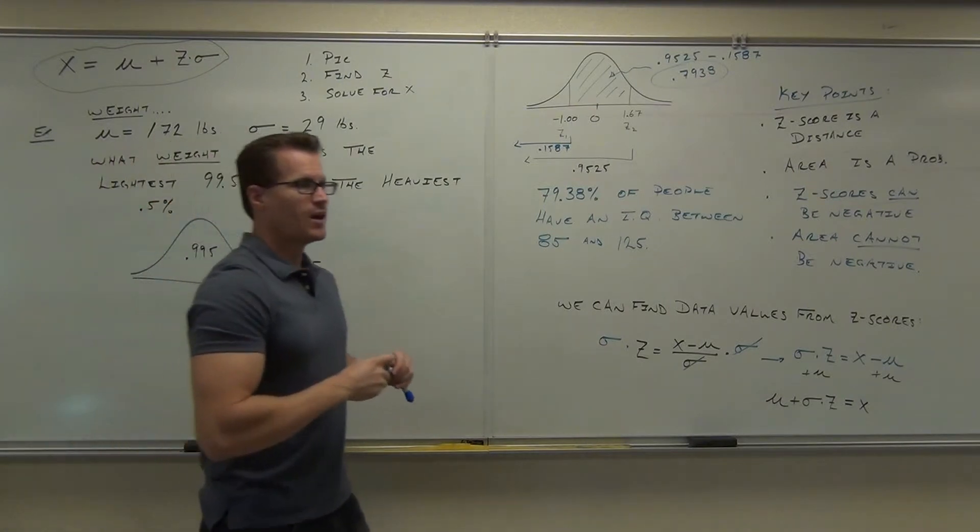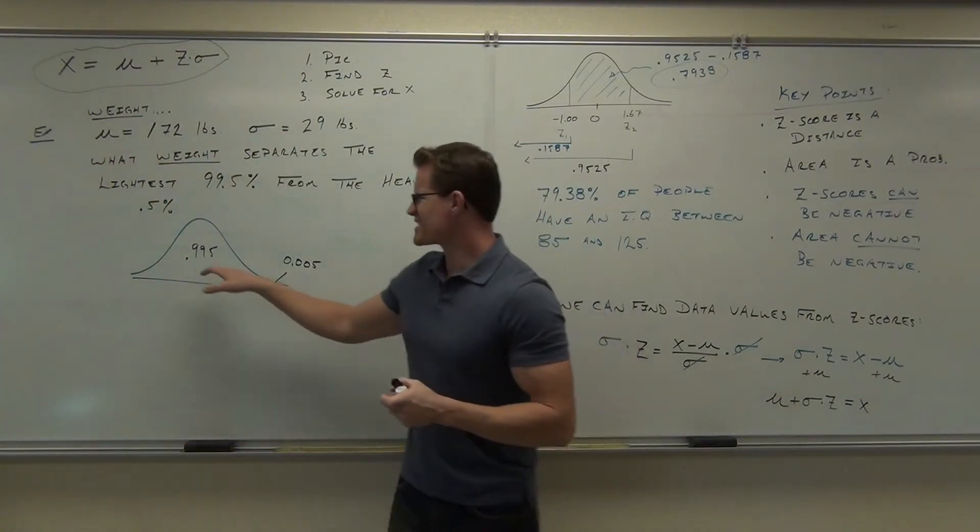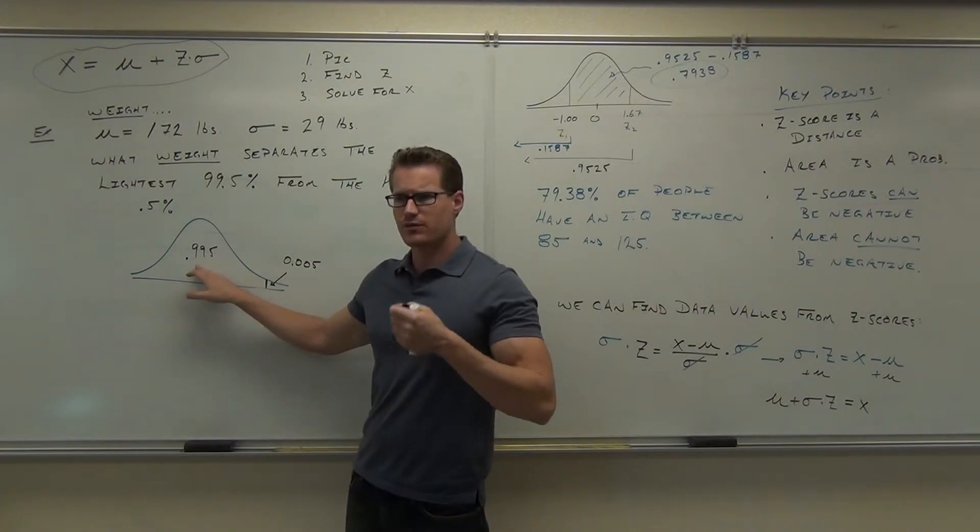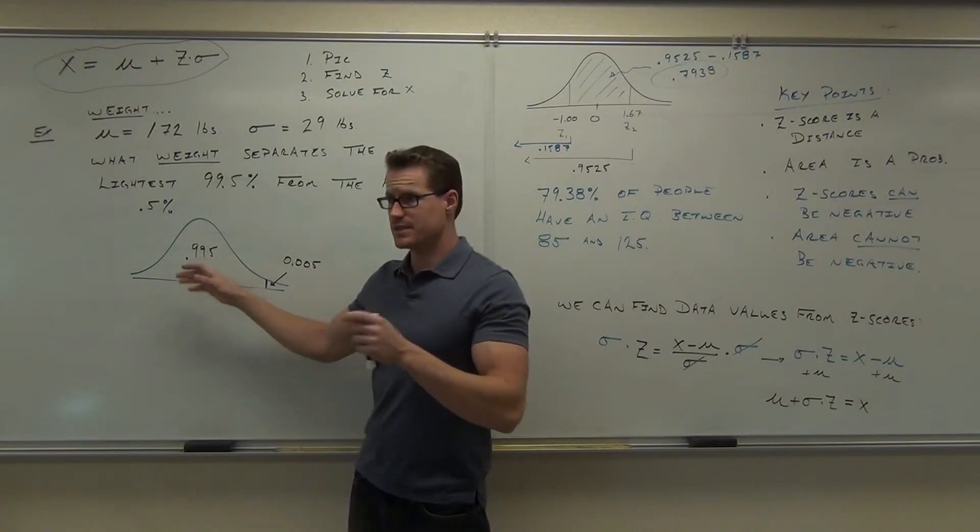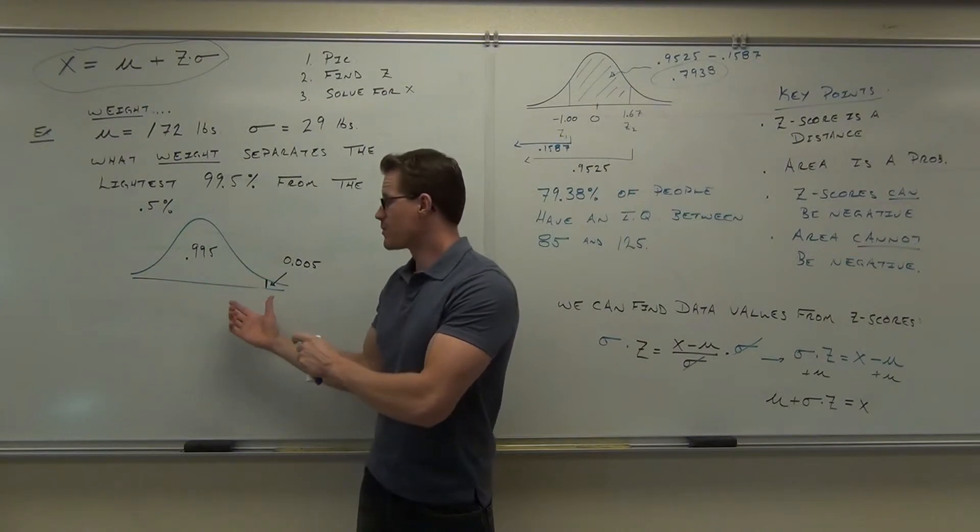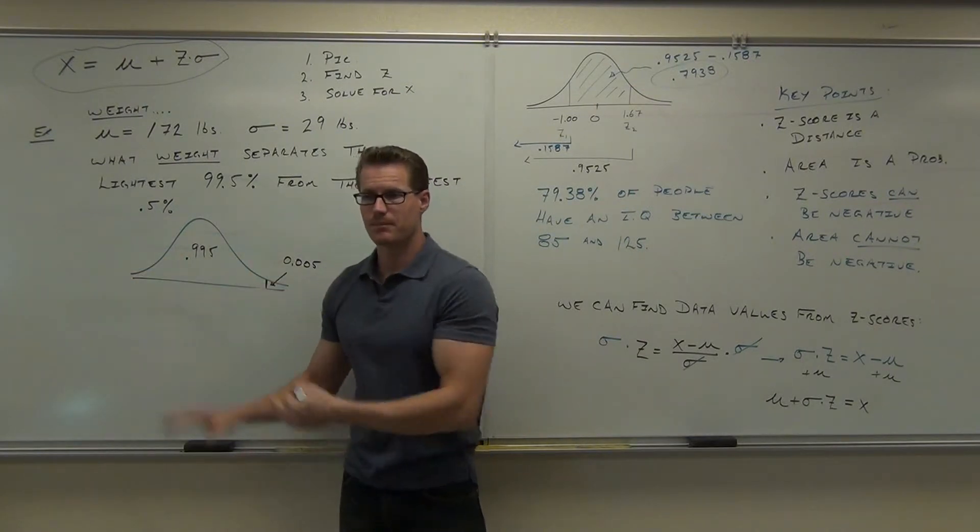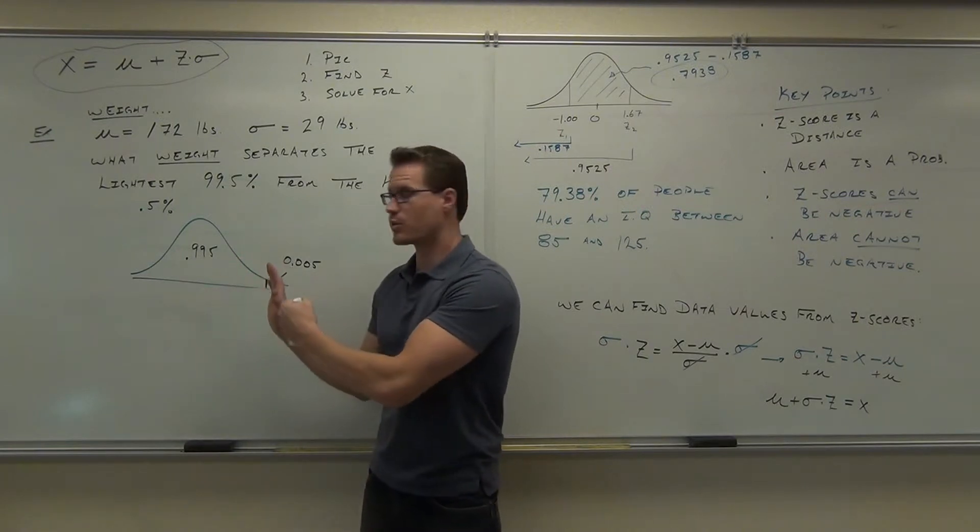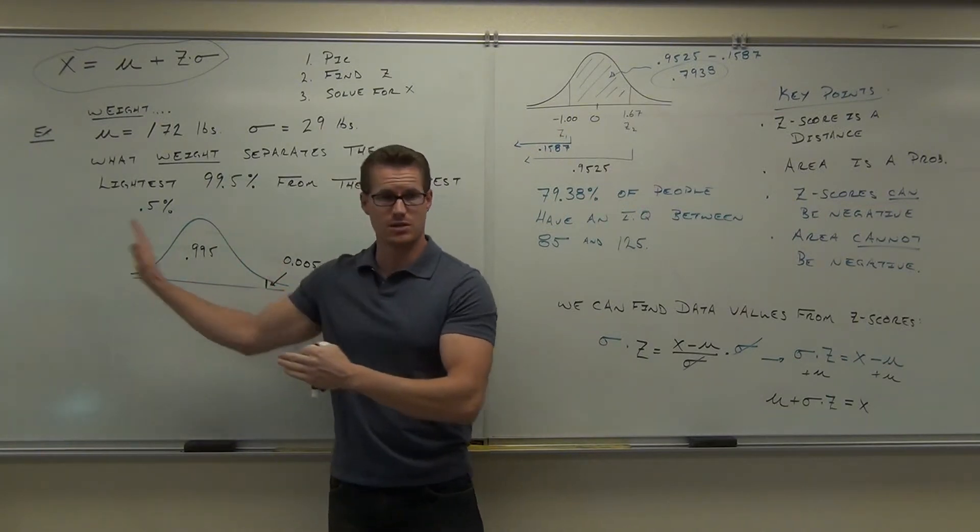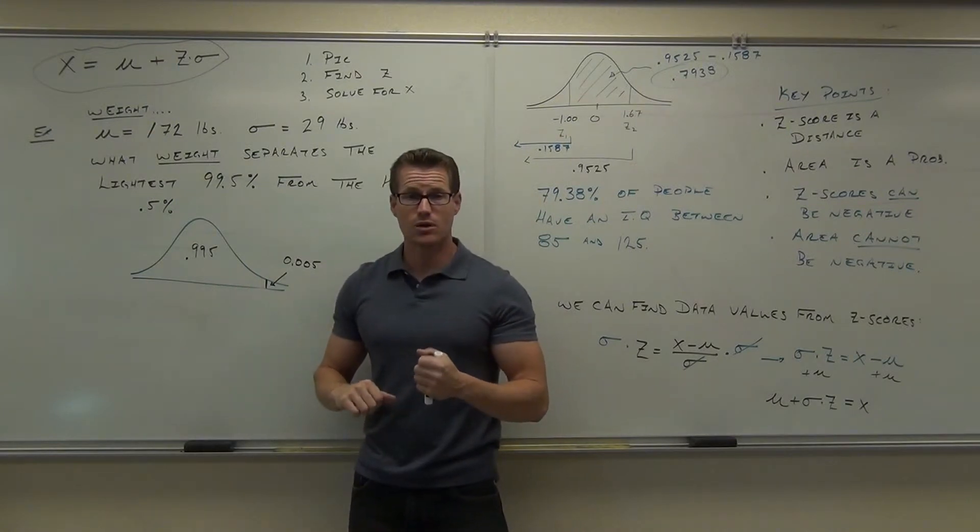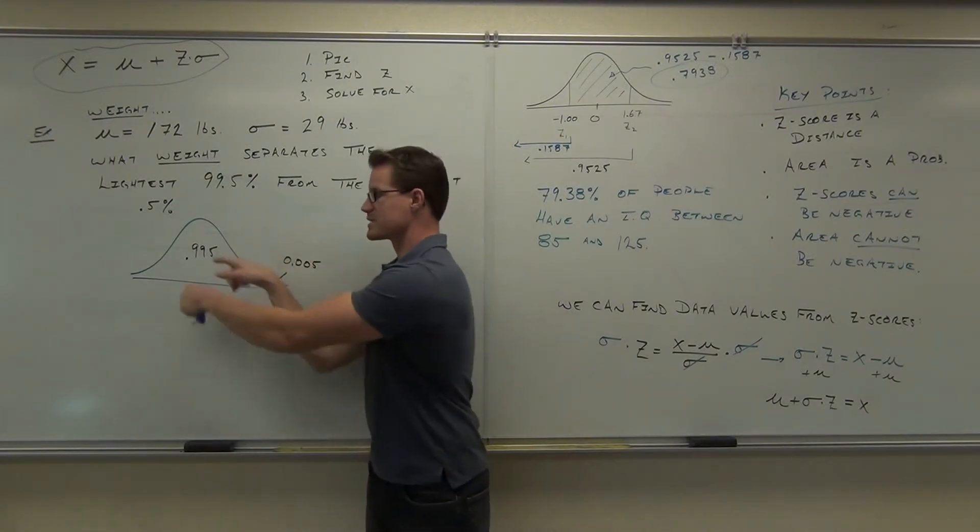We have now, what is this? Is this a z-score or an area? Area. That's an area. So what we're looking for is the z-score now that represents 99.5% that's below it and 0.5% is above it. Or 0.995 is below that, to the left of it, and 0.005 is above that. Can you go ahead and find a z-score that represents this information?